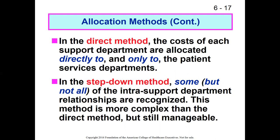So with the direct method, we're going to take support from the housekeeping department and send it directly to the supported departments — physical therapy and internal medicine, like we did before. Under step-down, we're going to come up with our allocation rate based on the supported support departments as well as the supported revenue centers. We're going to step-down housekeeping into the support departments, increasing the follow-on support departments' expenses to reflect the support that those departments get from the upstream support departments.